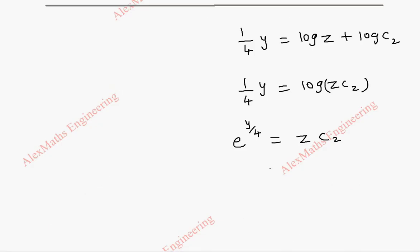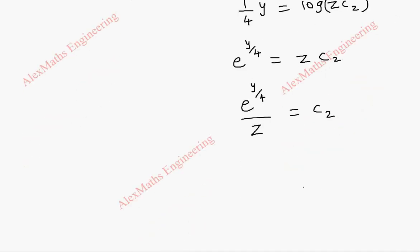From this I can rewrite e power y by 4 by z as c2. So finally when we give the solution this becomes v, that is e power y by 4 by z.